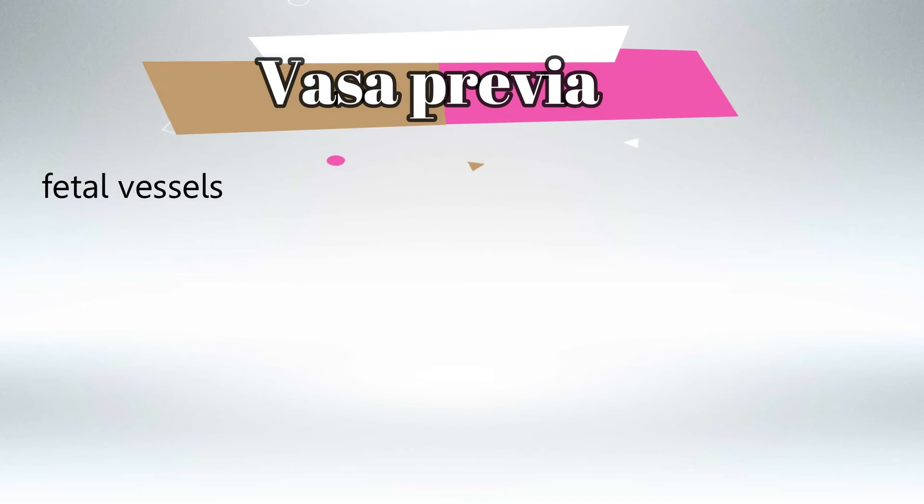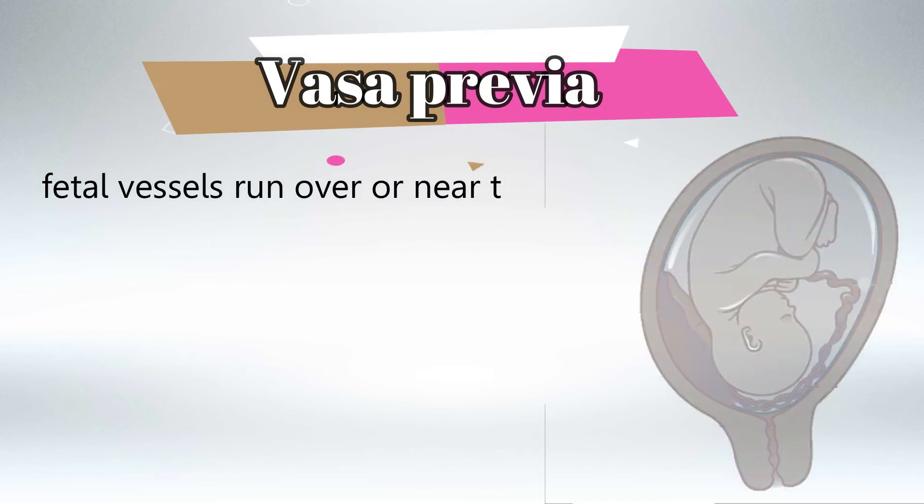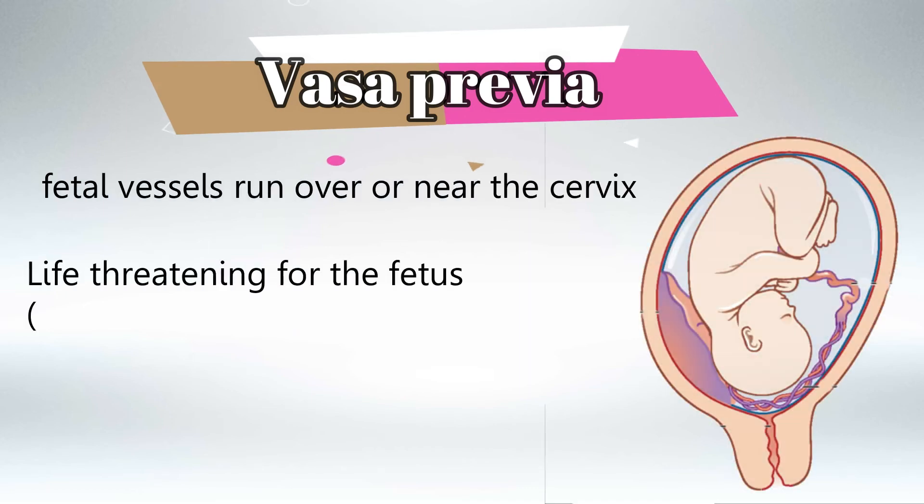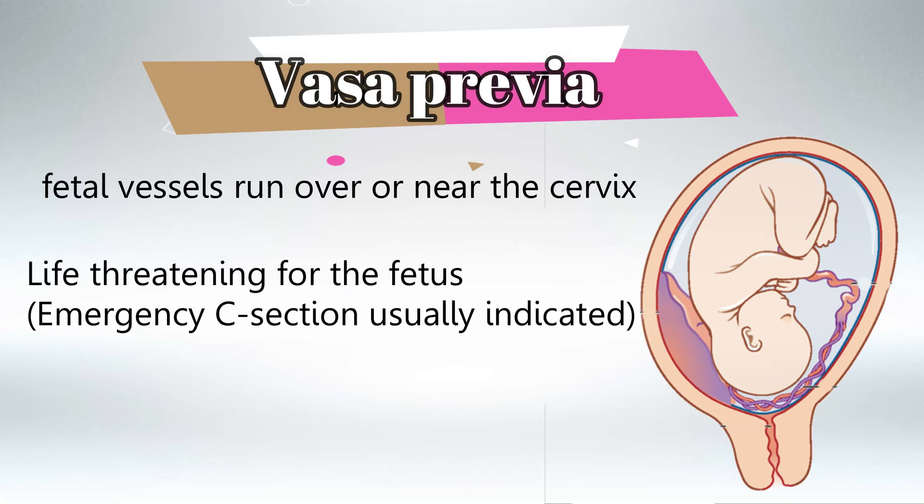Next we'll talk about vasa previa, which is the fetal vessels running over the cervix. This is life-threatening for the fetus and requires an emergency caesarean section once diagnosed.